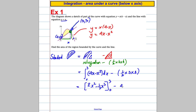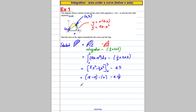Take away 3 times 3 times a half, which is 4.5. Substituting 3: 3 squared is 9, 2 times 9 is 18; 3 cubed is 27, one-third times 27 is 9, so 18 minus 9 is 9. Substituting 0 gives 0. So we get 9 minus 4.5, which equals 4.5. That is my area.